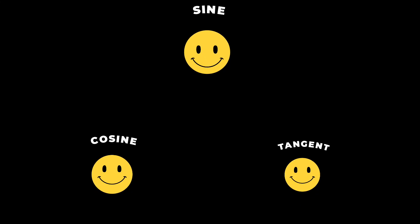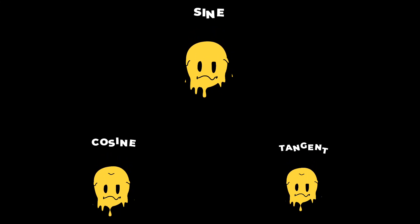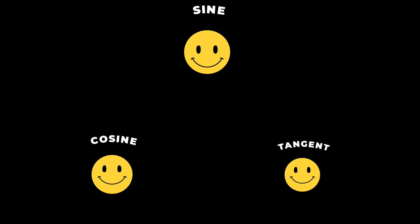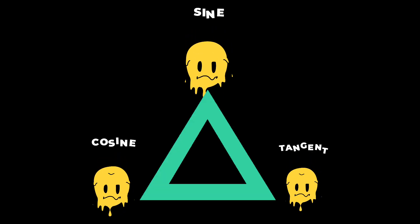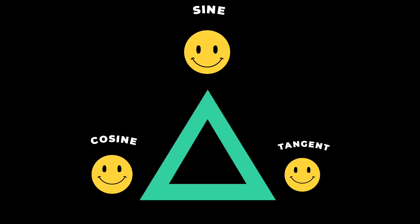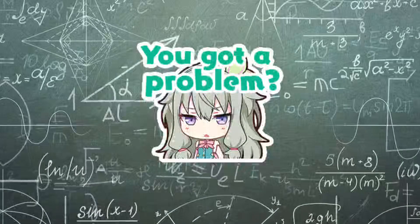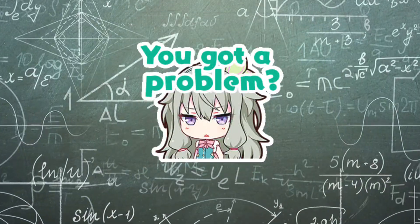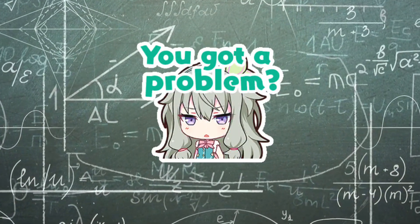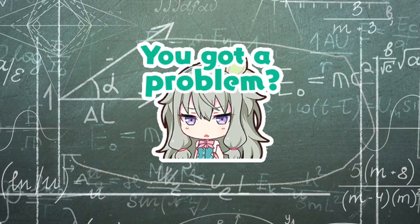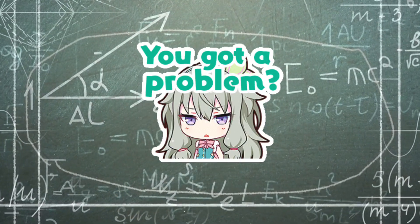Sine angle is also closely related to cosine and tangent, forming the basis of trigonometry. These three functions are essential in solving problems involving angles and sides of triangles.